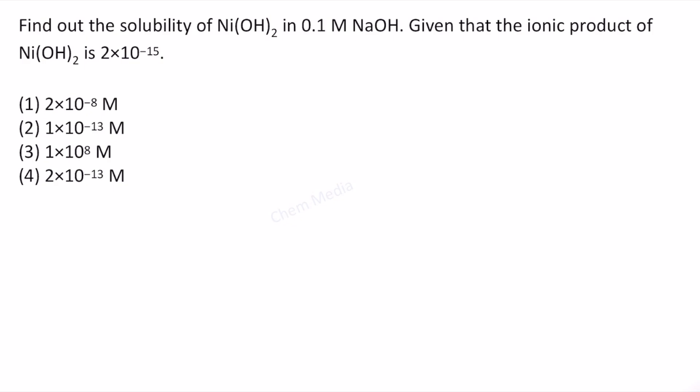The ionic product in this case can be written as concentration of nickel 2 plus times concentration of OH minus square. Why 2 here? Because nickel hydroxide dissociates as nickel 2 plus plus 2 times OH minus.